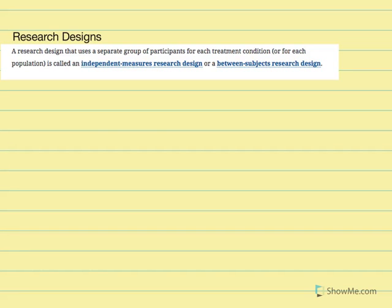The purpose of this video is to go over the different research designs that have been presented beginning in chapter 10 and in chapter 11. In chapter 10, which is the t-test for two independent sample means, we discussed the concept of between-subject research design, or between-subject design, and what that looks like.